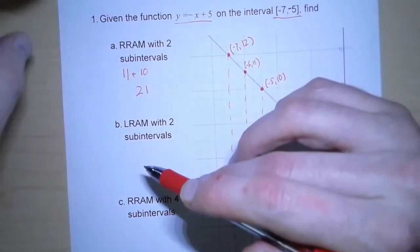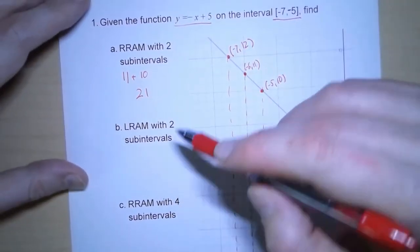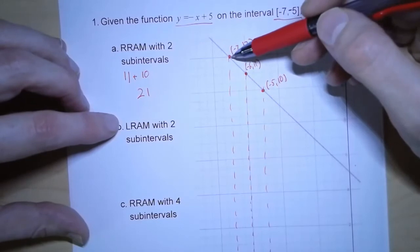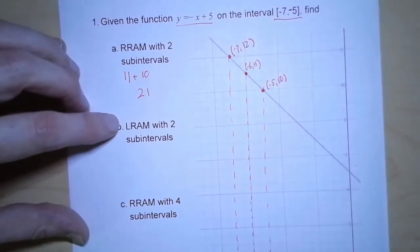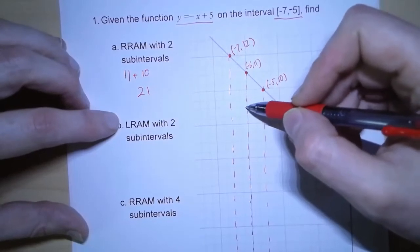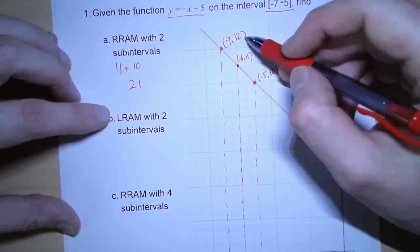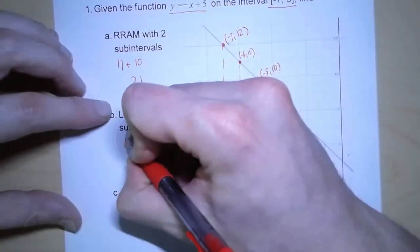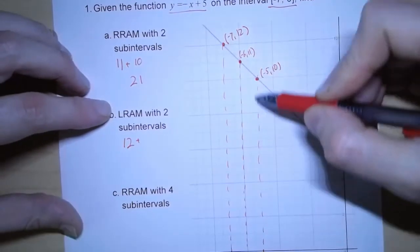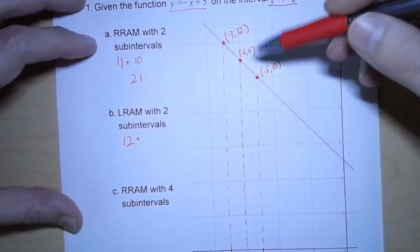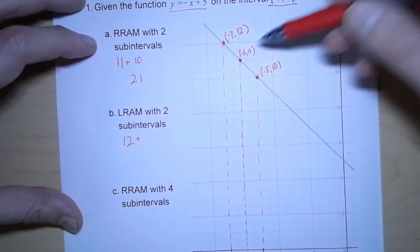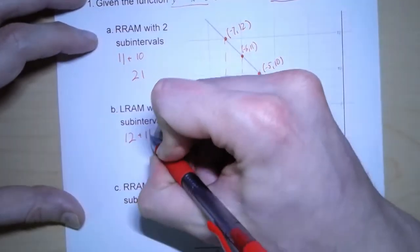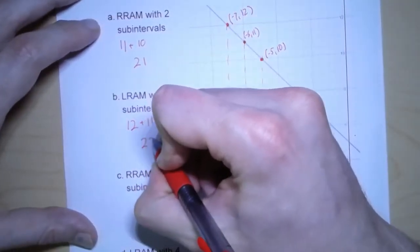LRAM takes the same idea, except that instead of using the right-hand side to determine how tall each strip is, we use the left-hand side. So from negative 7 to negative 6, we're going to use 12, the left-hand side — so that strip has an area of 12. And then from negative 6 to negative 5, we use the left-hand side, which is a height of 11, to be the height of that rectangle. So using LRAM, we get an estimate of 23.